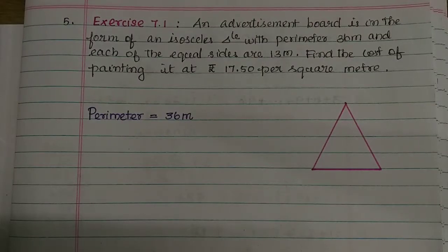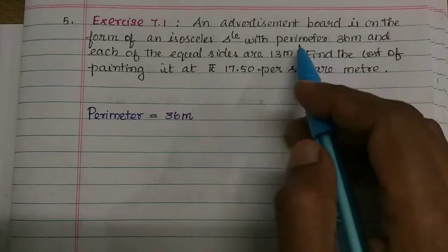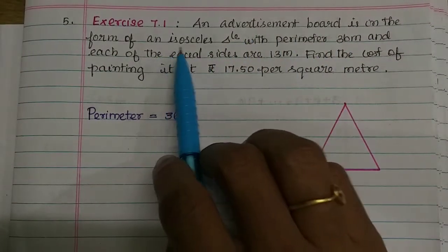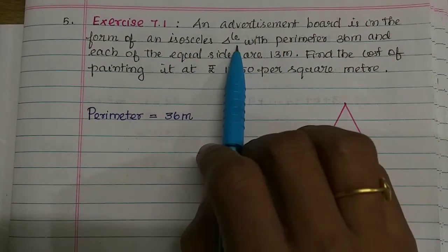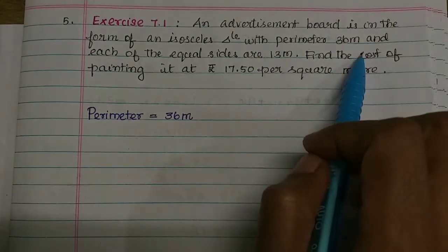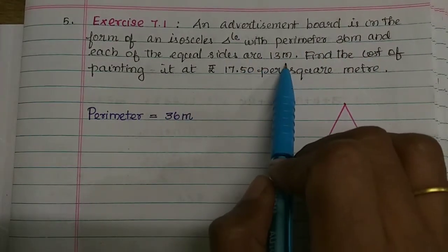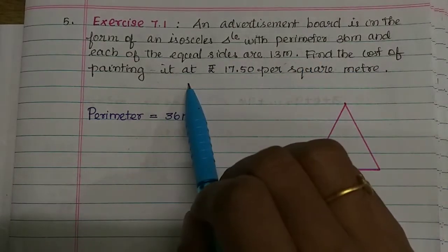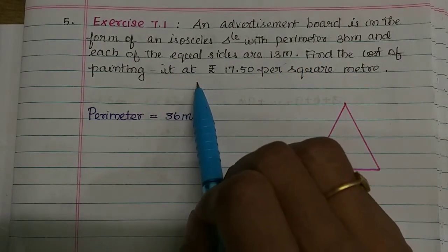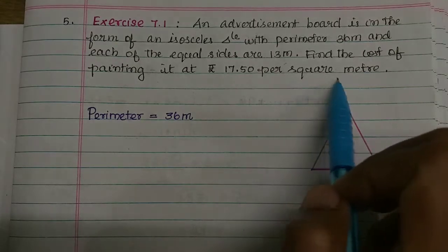Hi students. In the video, an advertisement board is in the form of an isosceles triangle with perimeter 36 meters and each of the equal sides are 13 meters. Find the cost of painting it at rupees 17.50 per square meter.